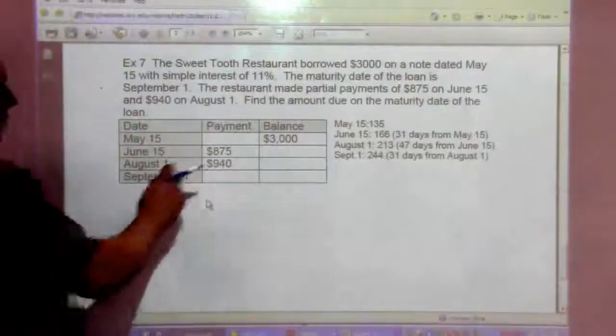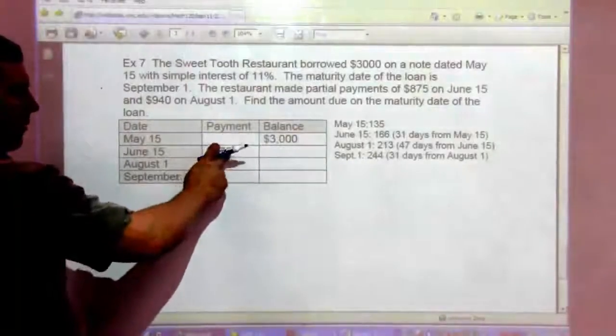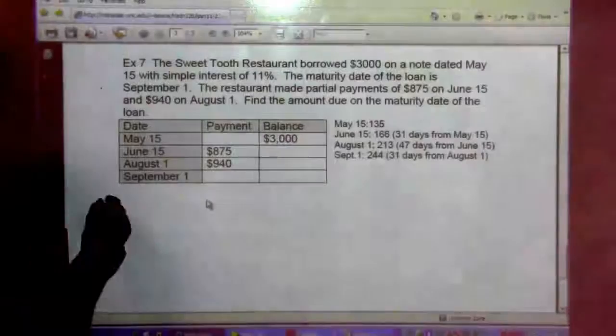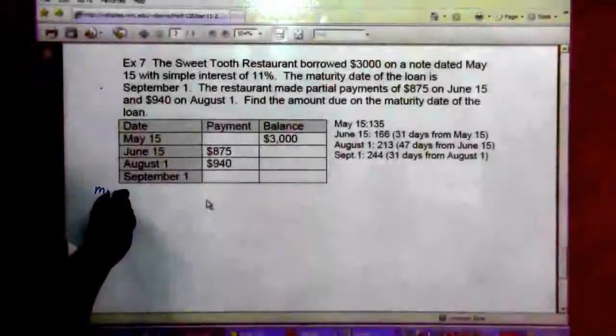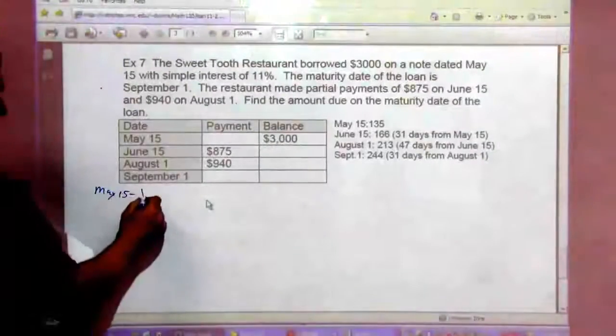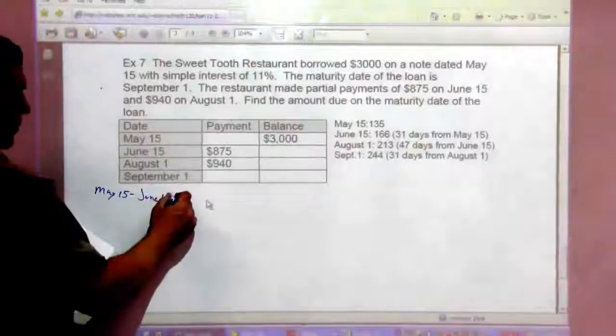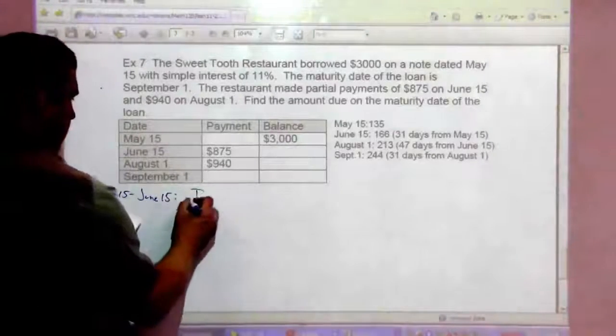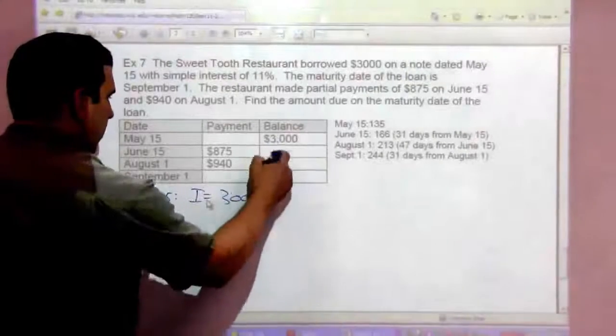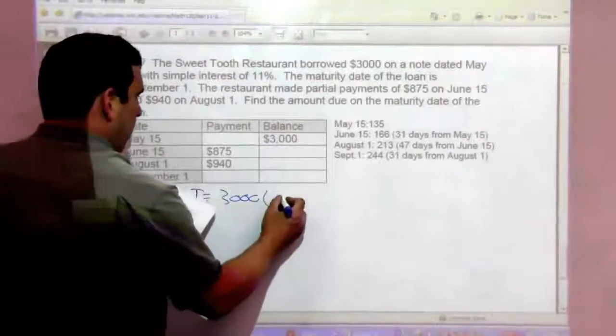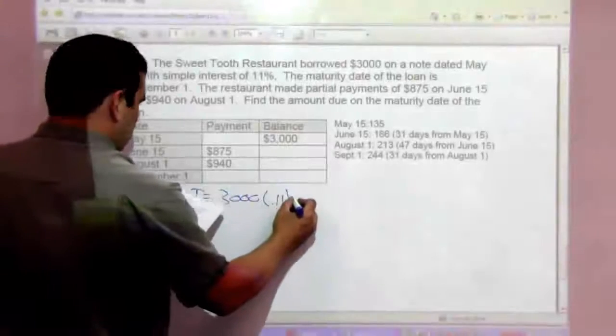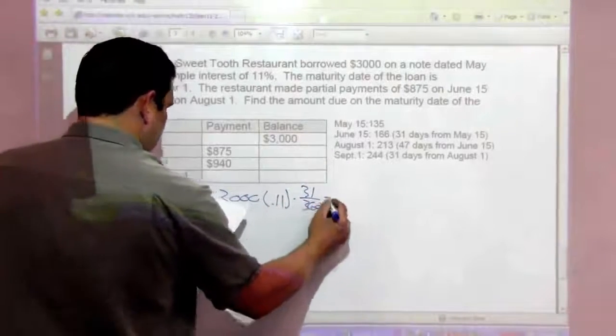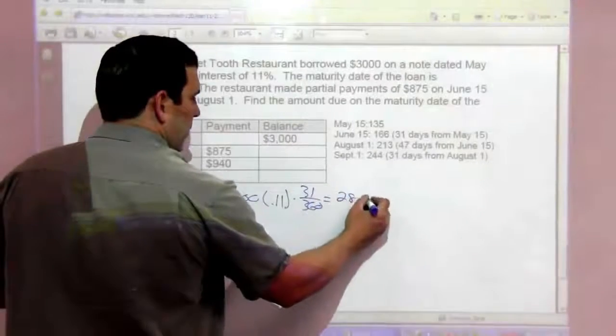So the first thing we want to do - the payment is $875, what's the interest part? We'll take off first and then subtract the rest from the balance. So we'll first do May 15th to June 15th. The interest is going to be $3,000, that's the total balance, times 0.11, that's 11% interest, times 31 out of 360, and we get $28.42.